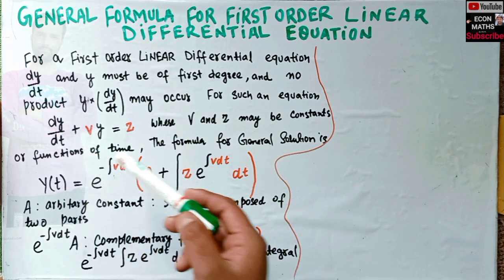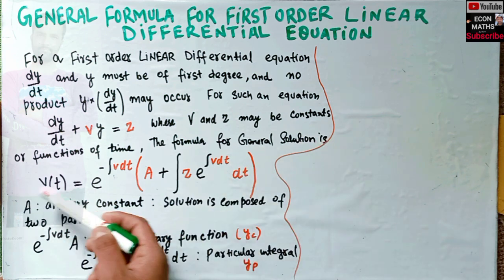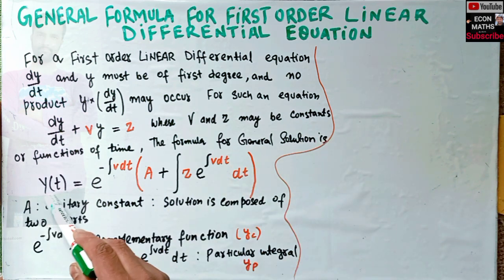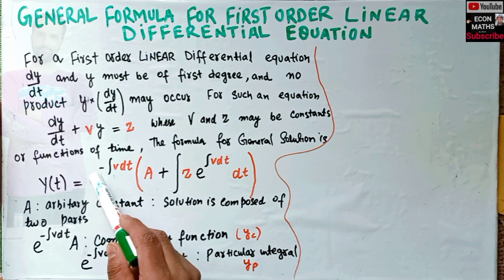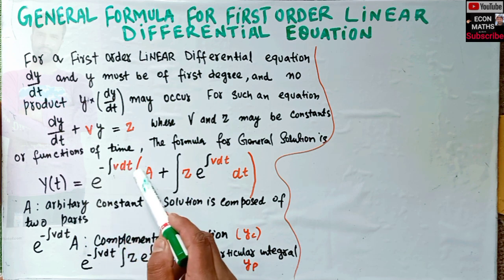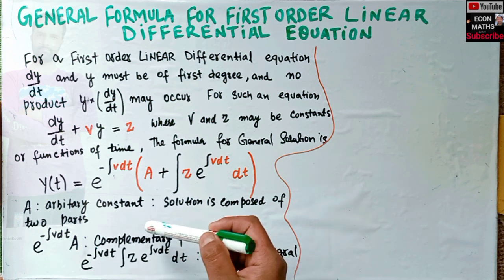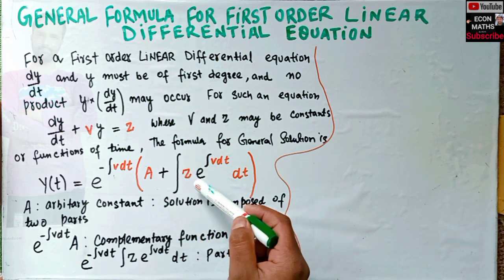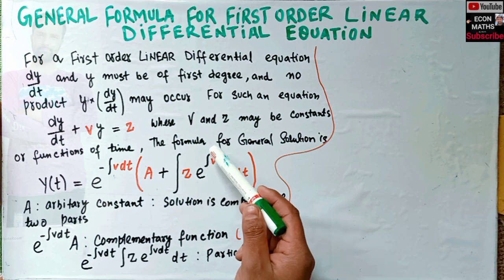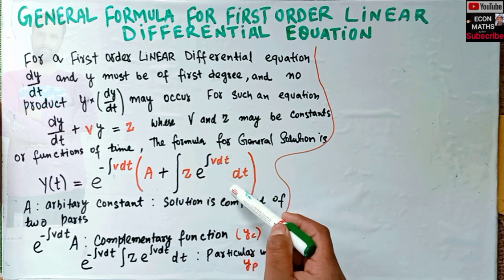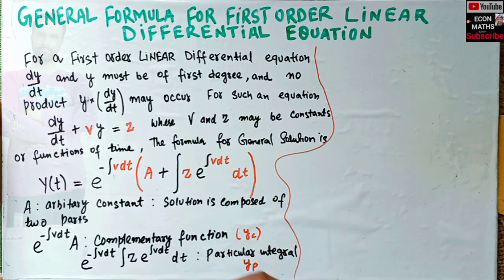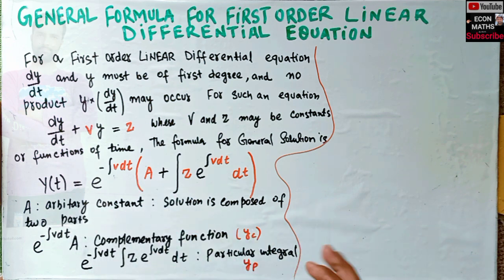For the general solution of this differential equation we use the formula: y(t) equals e to the power minus integral of v dt, times the bracket containing the arbitrary constant A plus the integral of z times e raised to the power integral of v dt, with respect to dt. Here A denotes the arbitrary constant, and the solution is composed of two parts.